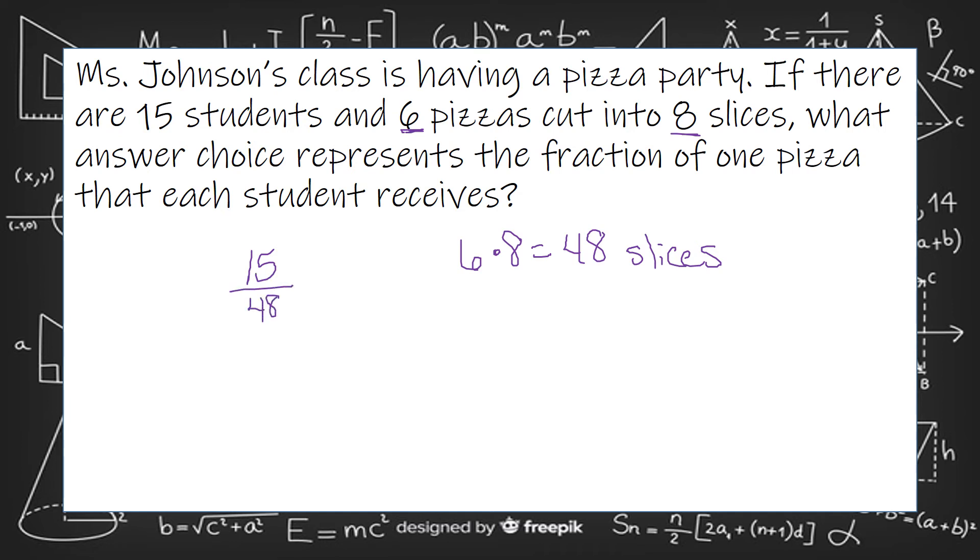So I'm just going to simplify. I know both of these are divisible by 3. So I see that's 5. 48 divided by 3 is 16. So each student receives 5 sixteenths of a pizza.